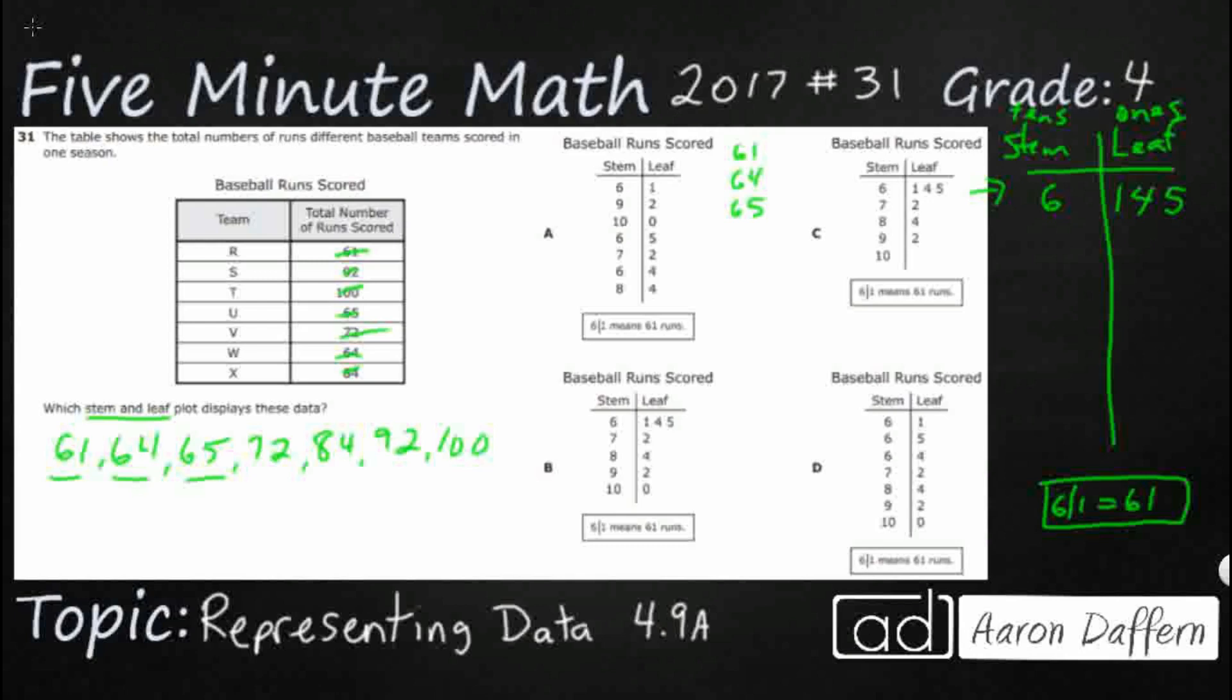So we're going to put a 7 because we've got something in the 70s. And it's just 72. That's it. So we put a 7 and a 2. And then we've got an 8, just 8 with a 4. Not much there. 9 with a 2 for my 92. Now here's the kind of tricky part: we're only putting a single digit over here on the right side for our ones, which means we actually need to have a stem of 10. I know it looks kind of weird, but we actually can have a stem of 10. That's fine. So we need to find the one that looks like this.